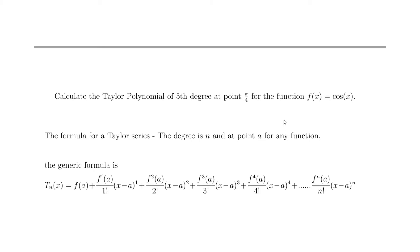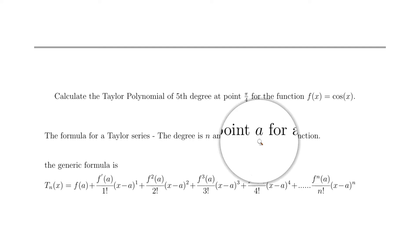In this video we're going to calculate a Taylor polynomial of fifth degree at the point π/4 for the function cosine of x. The formula for a Taylor series requires three important things: the degree — in our case n = 5 — the point a = π/4, and the function, which is cosine of x.